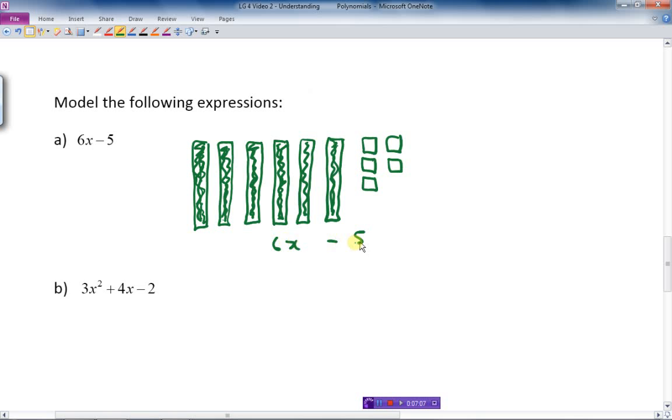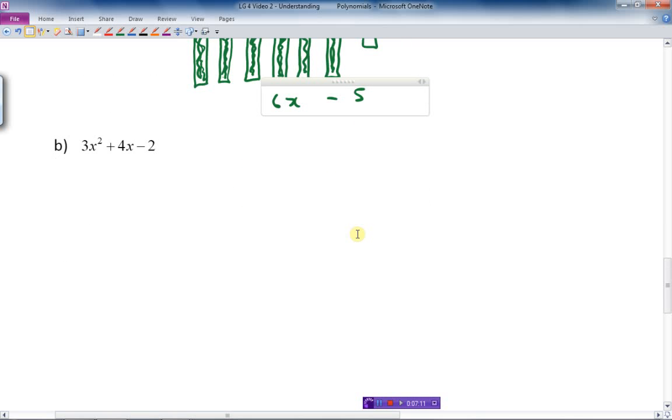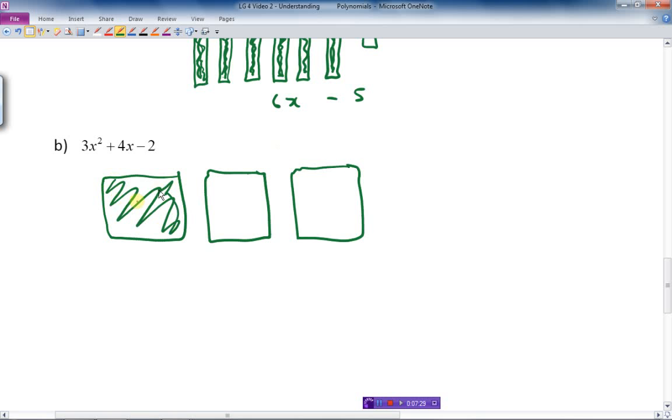Let's model the next one. 3x squared. Well, how would I model this one? In this example here, I would make a square. How many x squareds do I have? I have 3 of them, and they're positive. So that means I have to fill them in. So I'm just going to fill these in. So that's 3x squared.